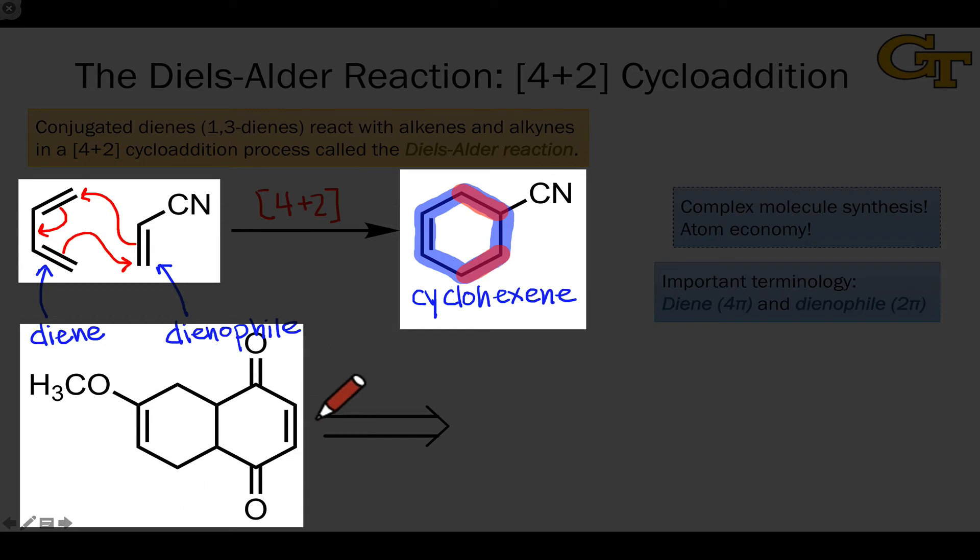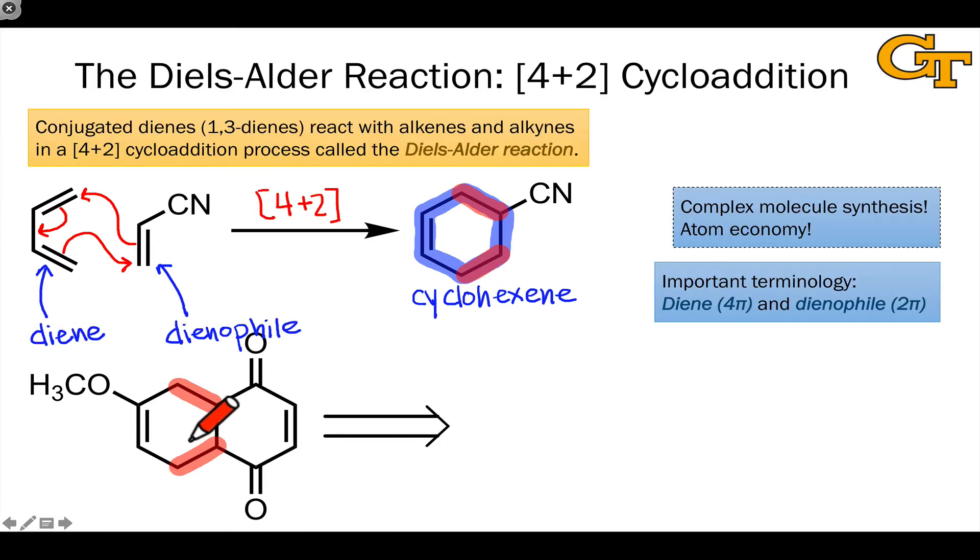And those bonds within this target at the bottom are here and here. One of the nice things about pericyclic reactions, and a theme you'll notice as we study the Diels-Alder reaction in more detail, is that to work backwards, you need only flow electrons in the opposite direction.